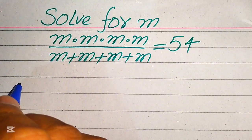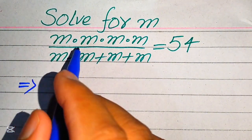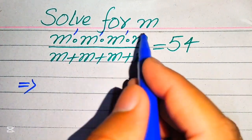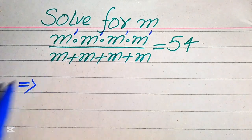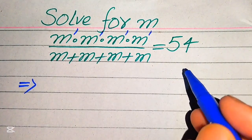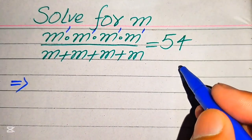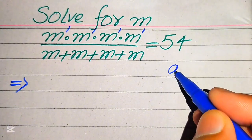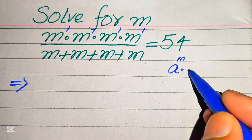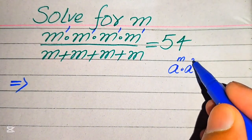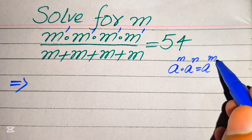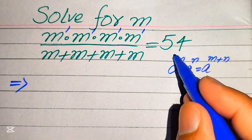First, you see that in the numerator term the exponent of each of these terms is equal to 1, and here we can apply the exponent law. You know this law: if we have a to the power of m multiplied by a to the power of n, it equals a to the power of m plus n.